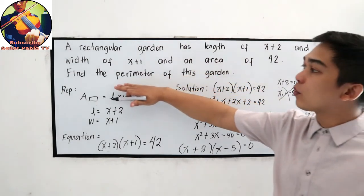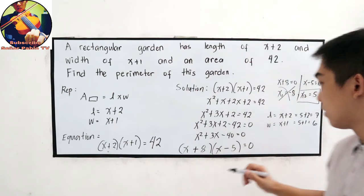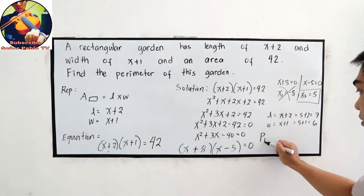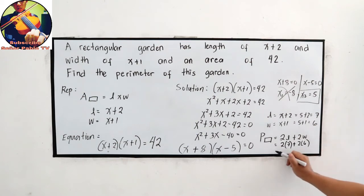Our final question is find the perimeter. Perimeter of a rectangular garden is equal to 2 length plus 2 width. So 2 times the length is 7, plus 2 times the width is 6. So 2 times 7, that is 14, plus 2 times 6, that is 12.